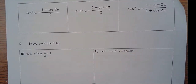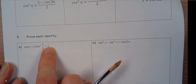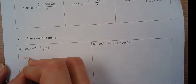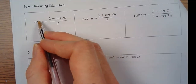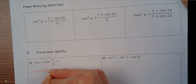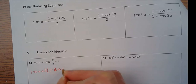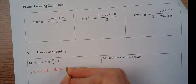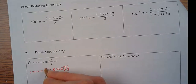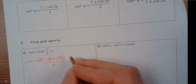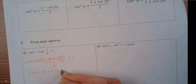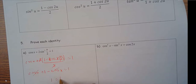Proving the first identity: I want to step sine²(x/2) down to first power. I've got cosine x plus 2·sine²(x/2). Sine squared u = (1 − cosine 2u) / 2, with u = x/2, so 2u = x. That gives cosine x + 2 · (1 − cosine x) / 2 = cosine x + 1 − cosine x = 1. That works.